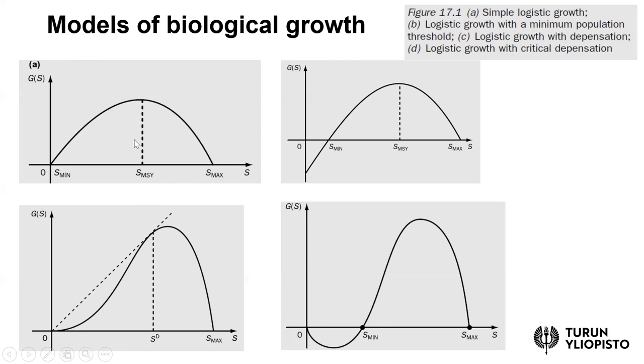The stock of timber reaches its maximum level S max, and growth becomes zero. S max is the largest amount of stock the forest can have, whereas S MSY has the highest growth rate. In the next lesson, we will talk about optimal timing of harvesting when we want to maximize economic returns from forest assets. This logistic growth model in panel A could be a good description of how timber stock is growing in the forest.